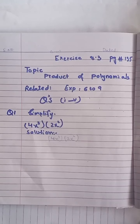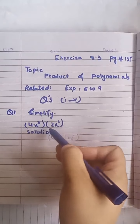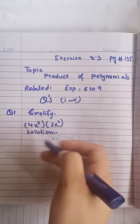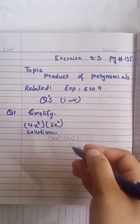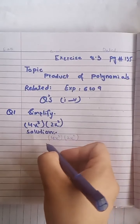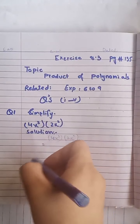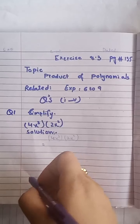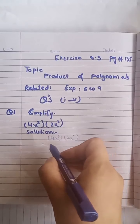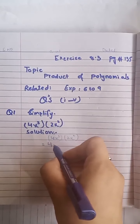Here you can see that these two terms or monomials are being multiplied. The multiplication of the terms: first of all you will write the coefficient with the coefficient.